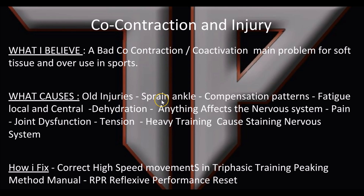For example, when you sprain an ankle you form a compensation pattern. The ankle may stop hurting, but you might then pull your hamstring because that compensation pattern isn't fixed — there's still a bad or less effective co-contraction that's not optimizing how you ran at high speeds. This is where a lot of prehab issues from old injuries come from: muscles aren't firing correctly together at high speeds, causing other muscles to get hurt and placing more strain on them.